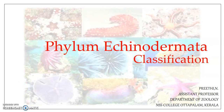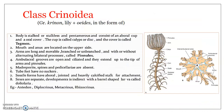Welcome to this session on the classification of Phylum Echinodermata. We will be discussing Class Crinoidea. The term comes from 'crinon' and 'oidus,' meaning lily and 'in the form of,' which is why they are commonly referred to as sea lilies. Crinoidea comprises both extinct and extant echinoderms, popularly known as sea lilies and sea feathers or feather stars.